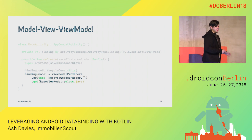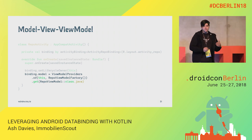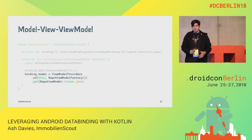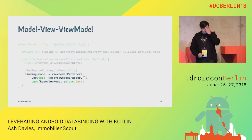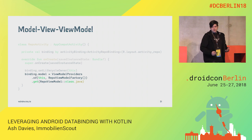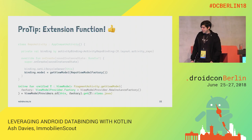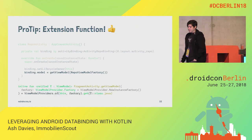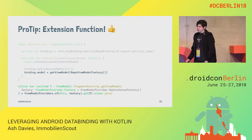If you're interested in how this works, I recommend checking out the source code of the AppCompatActivity, but it's a bit messy, as Android code is. We can improve this by introducing an extension function to actually retrieve the view model with a factory.